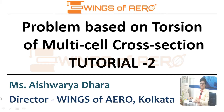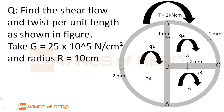Today we are going to see a problem based on Torsion of Multi-Cell Cross-Section, Tutorial 2. Find the shear flow and twist per unit length as shown in the figure. Take the shear modulus G equals to 25 × 10⁵ N/cm² and the radius R equals to 10 cm. As in the given figure, the torsional moment T is acting in the clockwise direction of 2000 Newton centimeter.